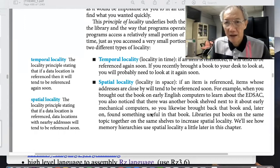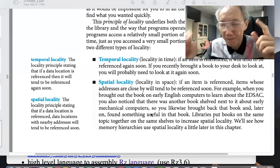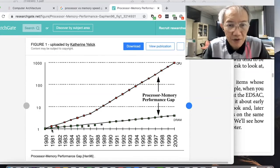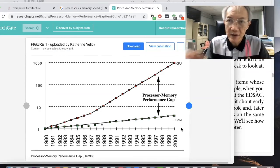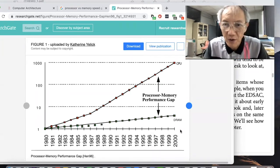First of all, we have this so-called processor memory gap. So horizontal axis is time, it's years. So unfortunately, this is very old.